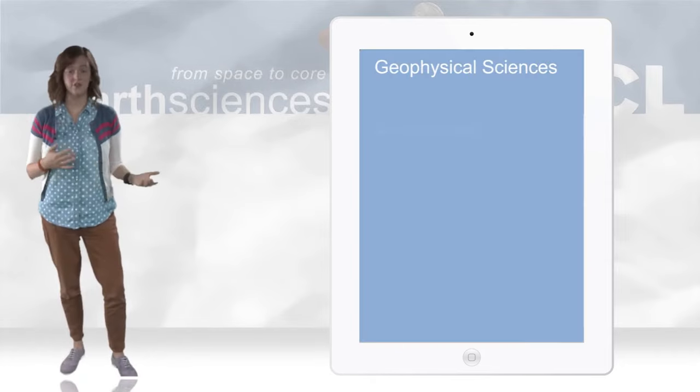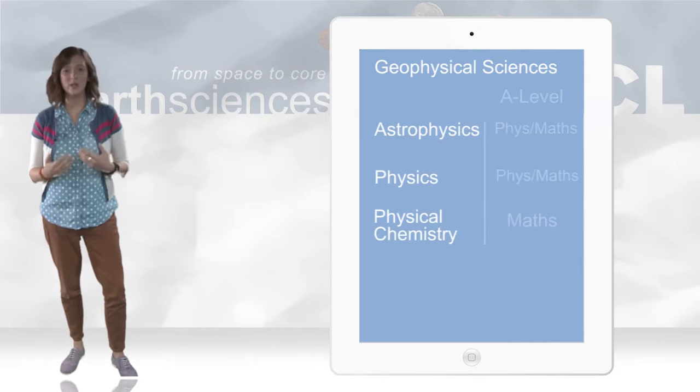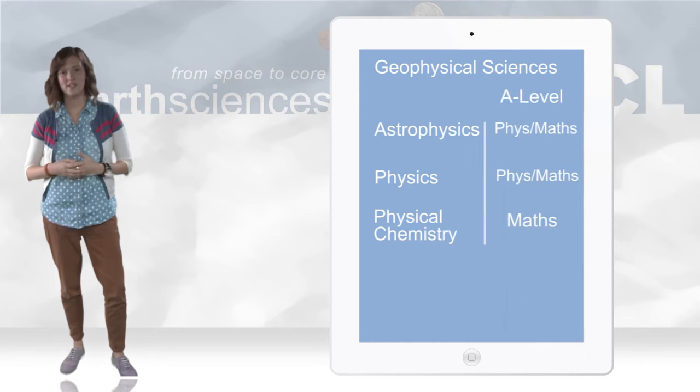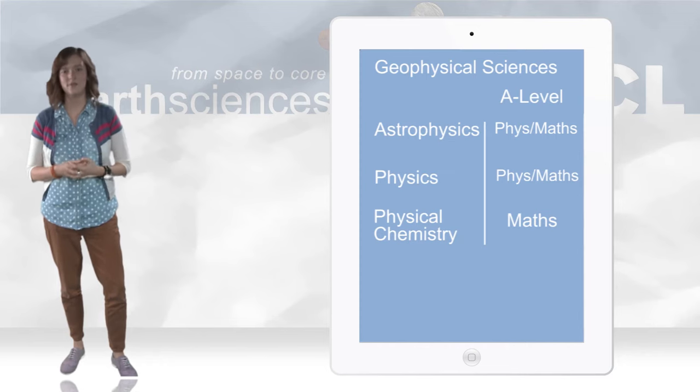You can combine this stream with astrophysics, or physics, or physical chemistry. An A level in physics and maths will be required to combine with physics and astrophysics, and chemistry, and ideally maths at A level for physical chemistry.